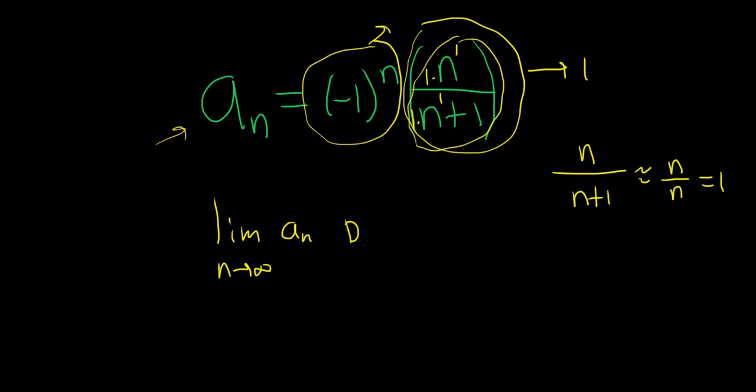The answer is going to be DNE and again it's really the fact that this piece here approaches one and then this just oscillates back and forth. It's either one or negative one, one or negative one.